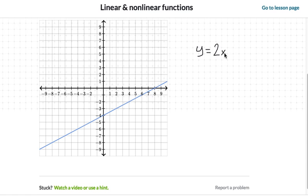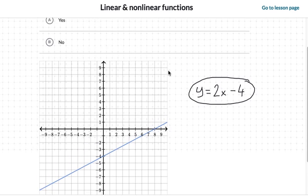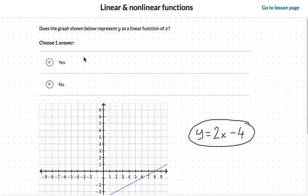So y equals 2x and the y-intercept there is negative 4 so minus 4. This is the equation of our line. We can see it is a linear equation so this here is a linear function.